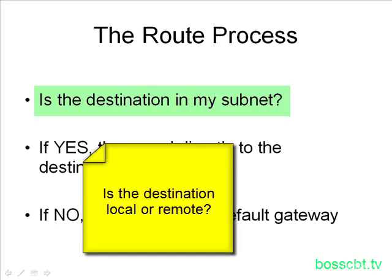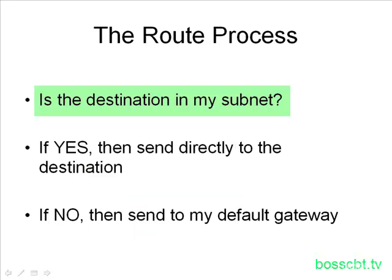If you're not yet familiar with IP addressing and subnetting, a subnet is essentially a group of consecutive IP addresses. If you think of the numbers 1 through 10, it's a consecutive range, and that group would be similar to what a subnet is — but for a subnet, it would be in IP address format. Take a look at the IP addressing tutorials if you're not yet up to speed on IP addressing and subnetting.